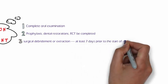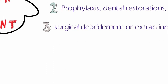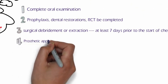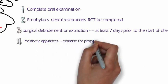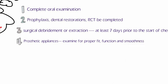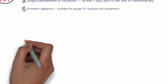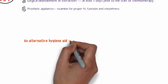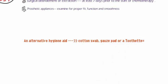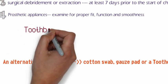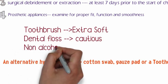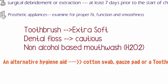Surgical procedures for periodontal conditions or extractions must be done seven days prior to the start of chemotherapy to allow sufficient time for wound healing. Prosthetic appliances must be checked properly and any inadequacies or defects must be fixed, or a new prosthesis should be made before chemotherapy begins. Dentists should ask their patients to keep an alternative hygiene kit consisting of oral swabs, gauze pads, and individual disposable oral swabs.